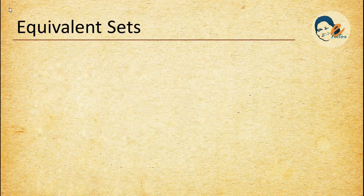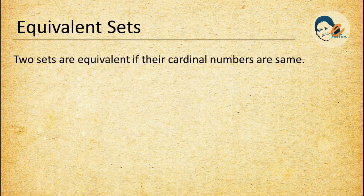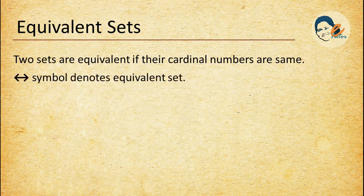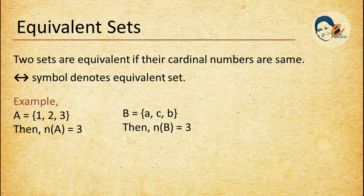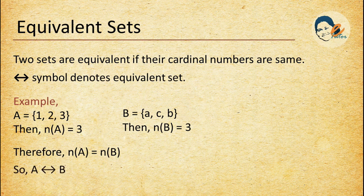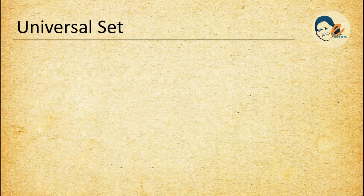Equivalent sets: two sets are equivalent if their cardinal numbers are the same. The double-sided arrow symbol denotes an equivalent set. Example: if set A has elements {1, 2, 3} then the cardinal number of set A is 3. If set B has elements {A, C, B} then the cardinal number of set B is also 3. Therefore n(A) = n(B) and these sets are equivalent sets. We can represent this as set A ~ set B.